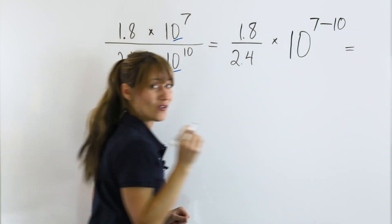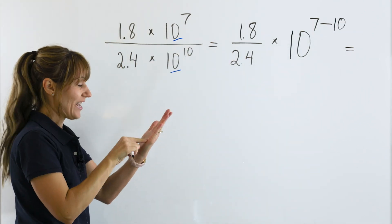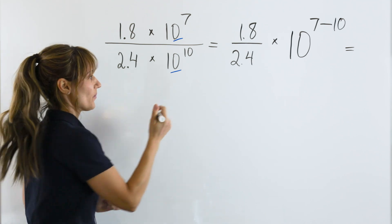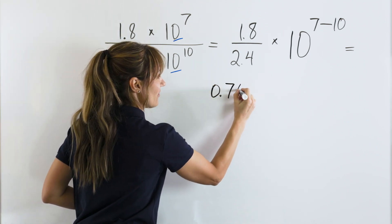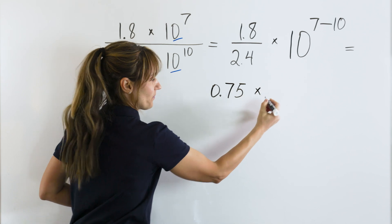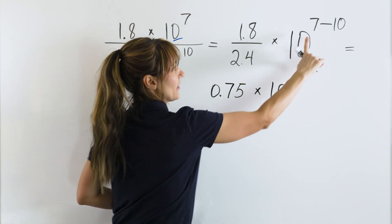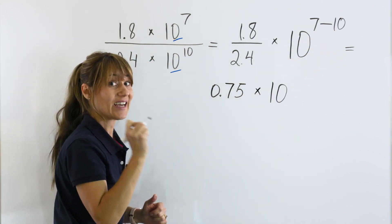So, now let's calculate. 1.8 divided by 2.4, we have 0.75 times 10 to the power of 7 minus 10 is negative 3.